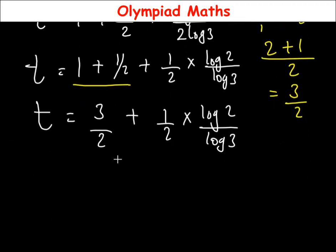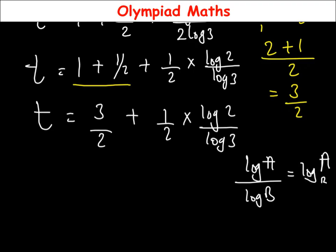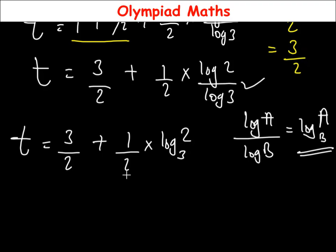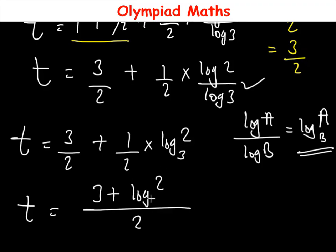We are also going to introduce one principle: if you have log of a over log of b, this is equal to log of a base b. Applying this right here, t is equal to 3 over 2 plus 1 over 2 times log 2 base 3. Now we have a common denominator, so t equals all over 2: 3 plus log 2 base 3.